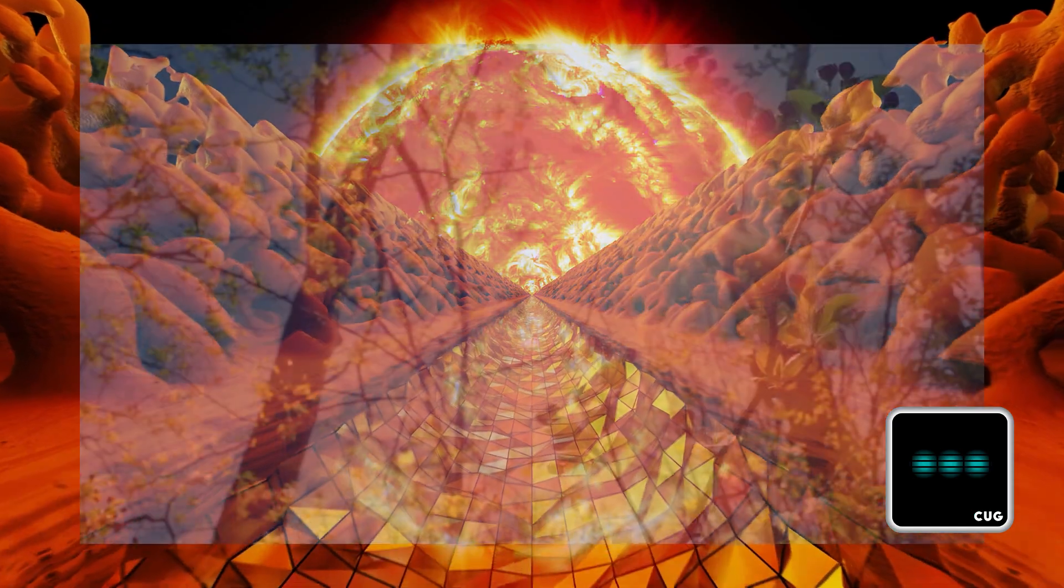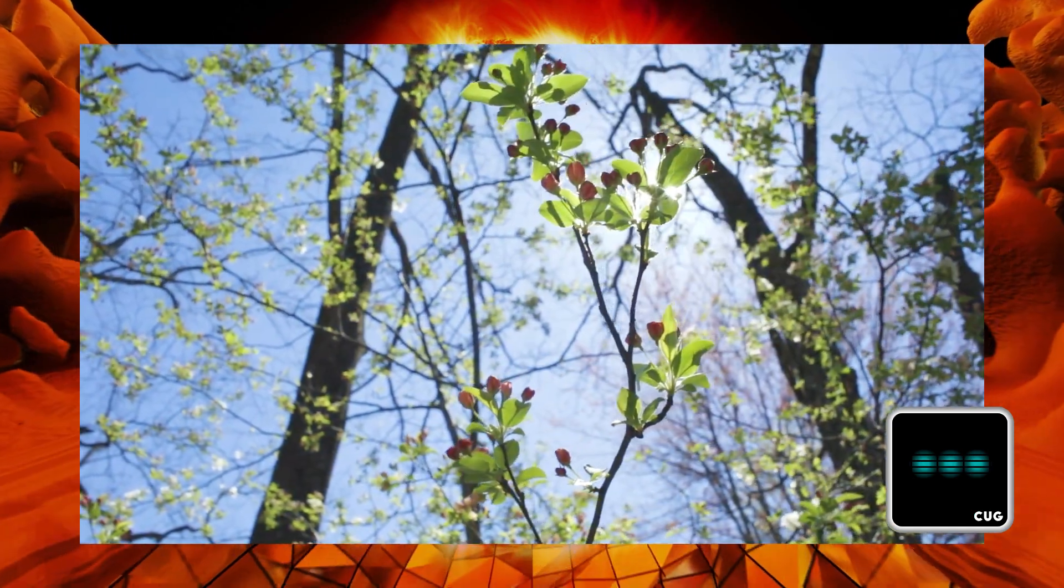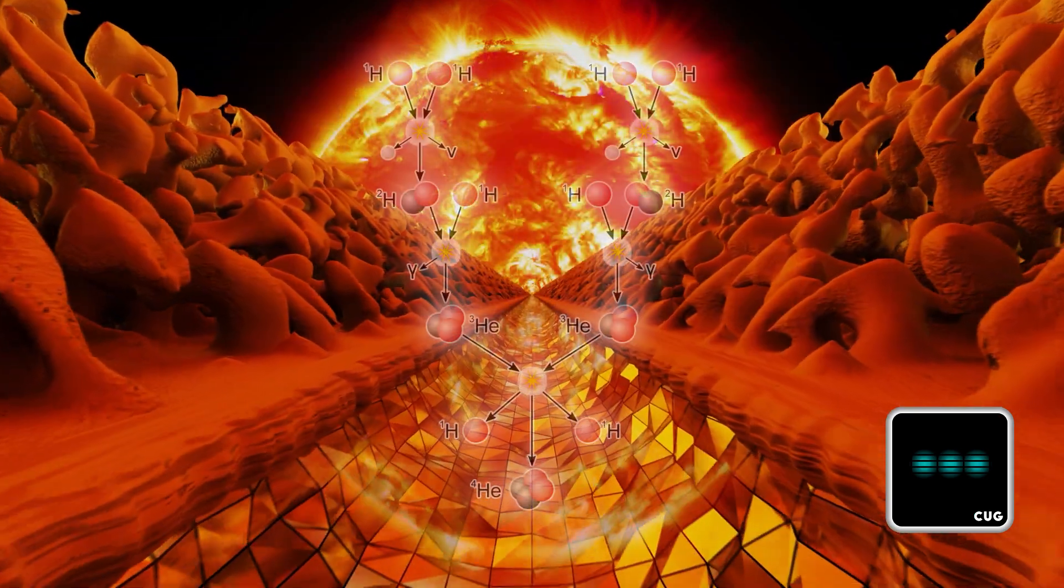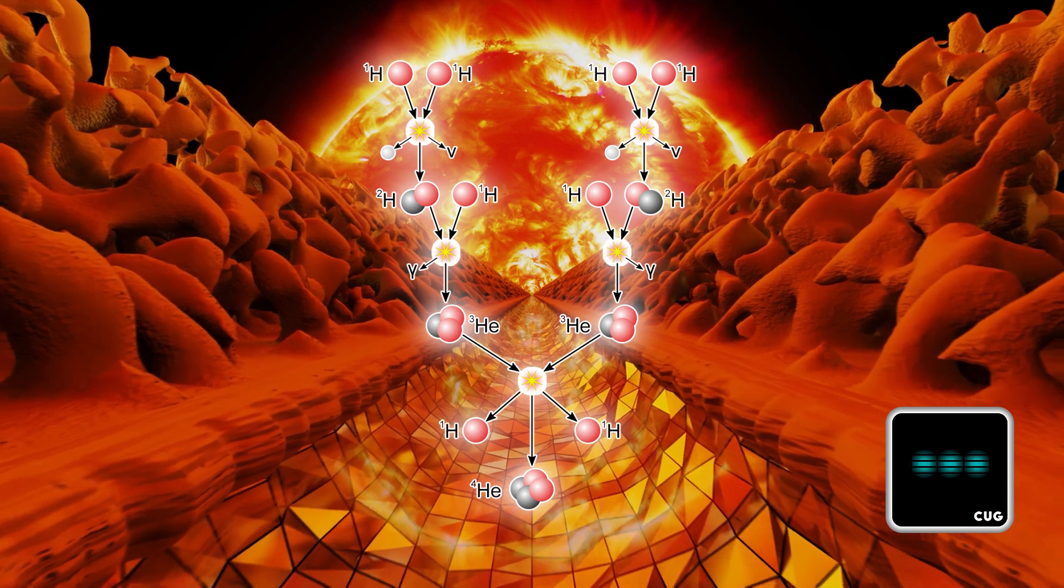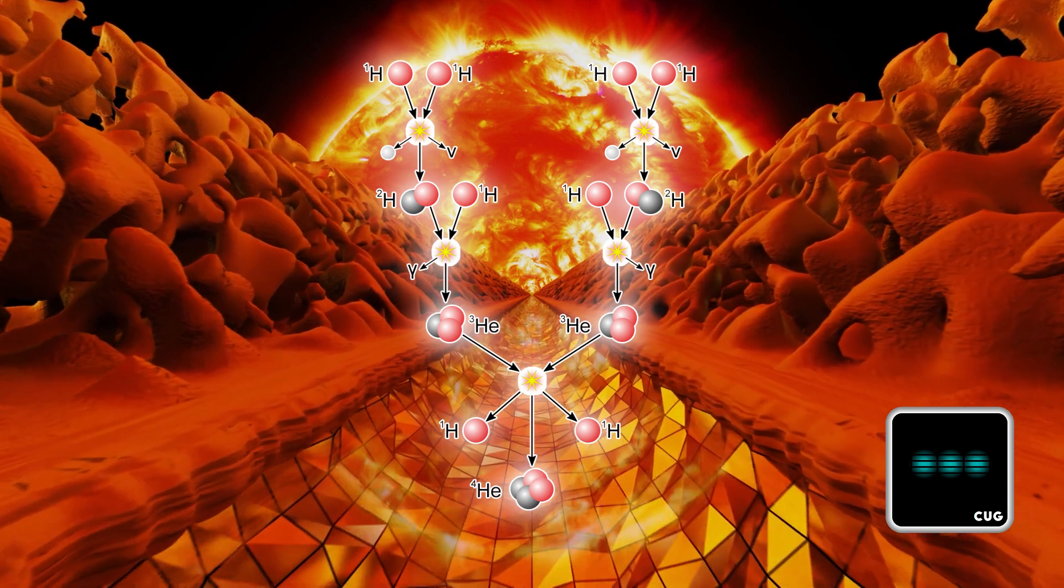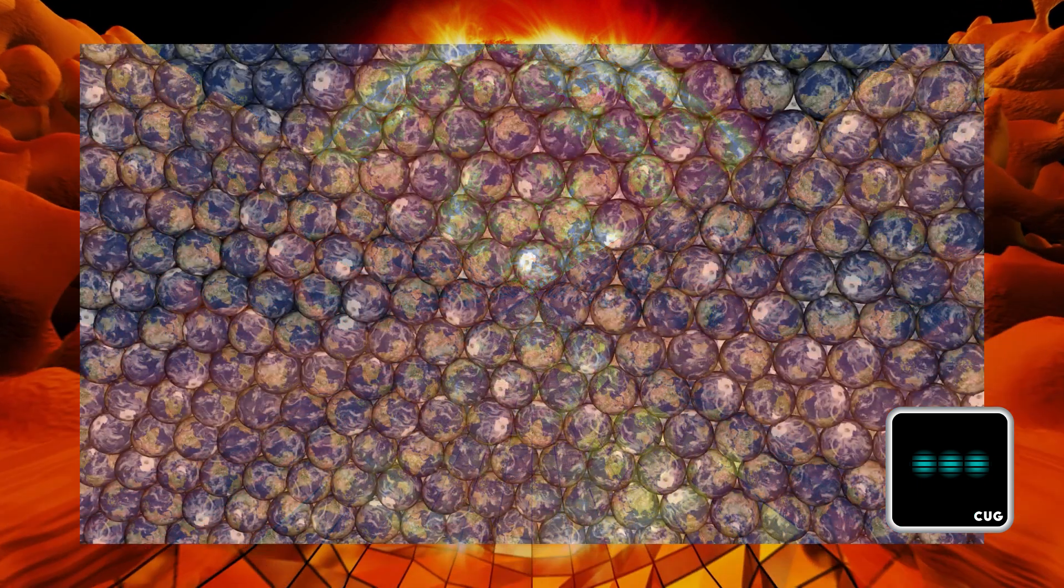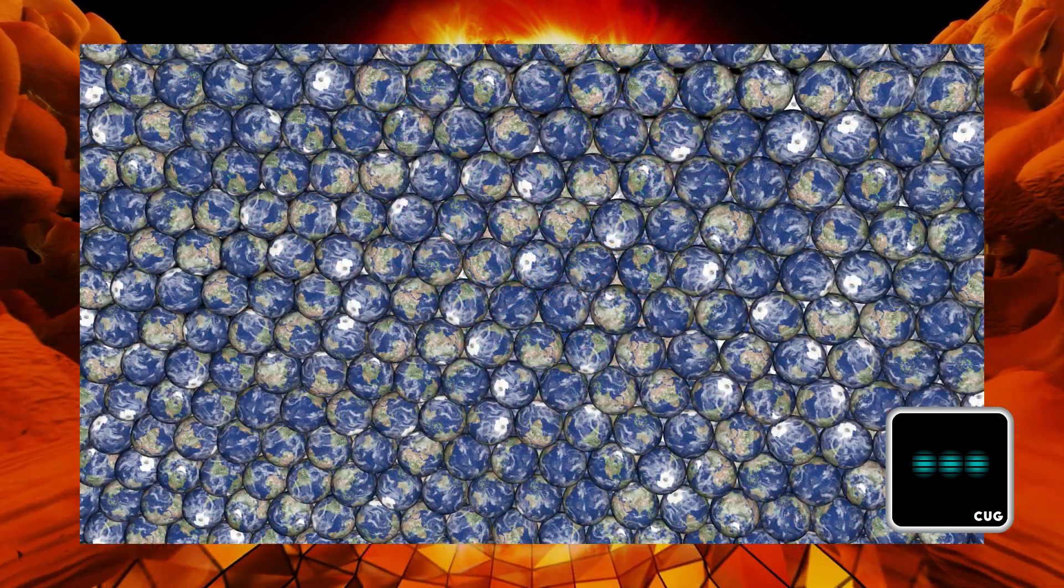Probably if we weren't used to it, it would be very strange that there's a point in the sky where you can hardly look at. That thing in the sky converts four million tons of matter per second into energy by fusing hydrogen into helium, and could contain over a million planets like the one I'm standing on in its volume.